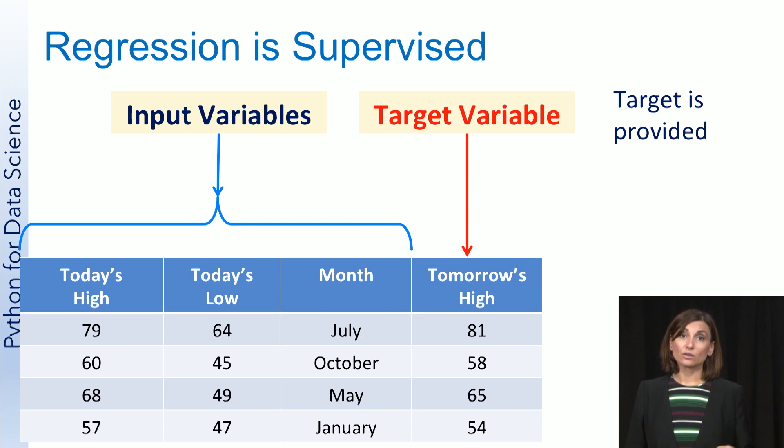This is what the data set might look like for the regression task of predicting tomorrow's high temperature. The input variables could be the high temperature for today, the low temperature for today, and the month. And the target is the high temperature for tomorrow. The model has to predict this target value for each sample.